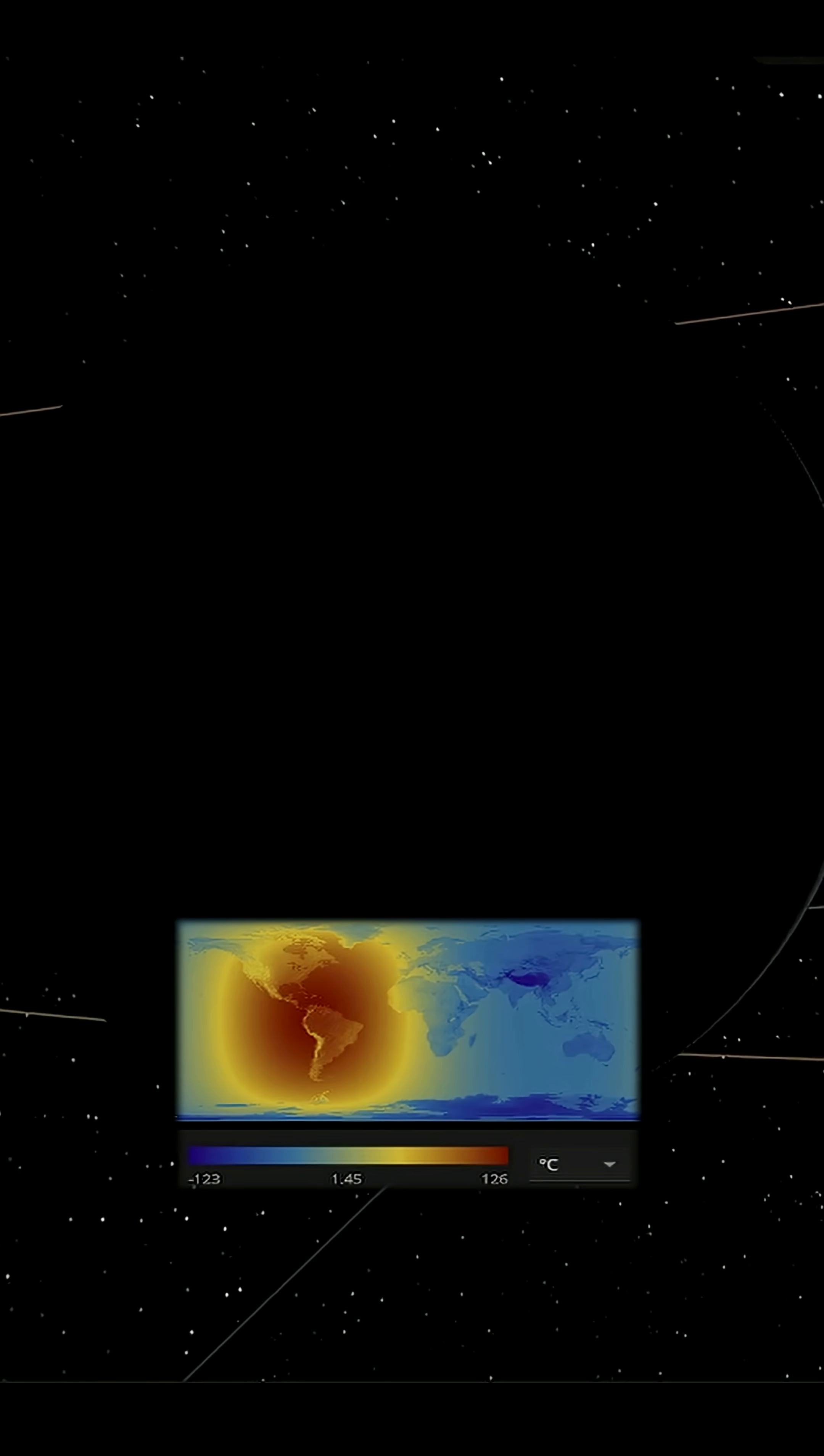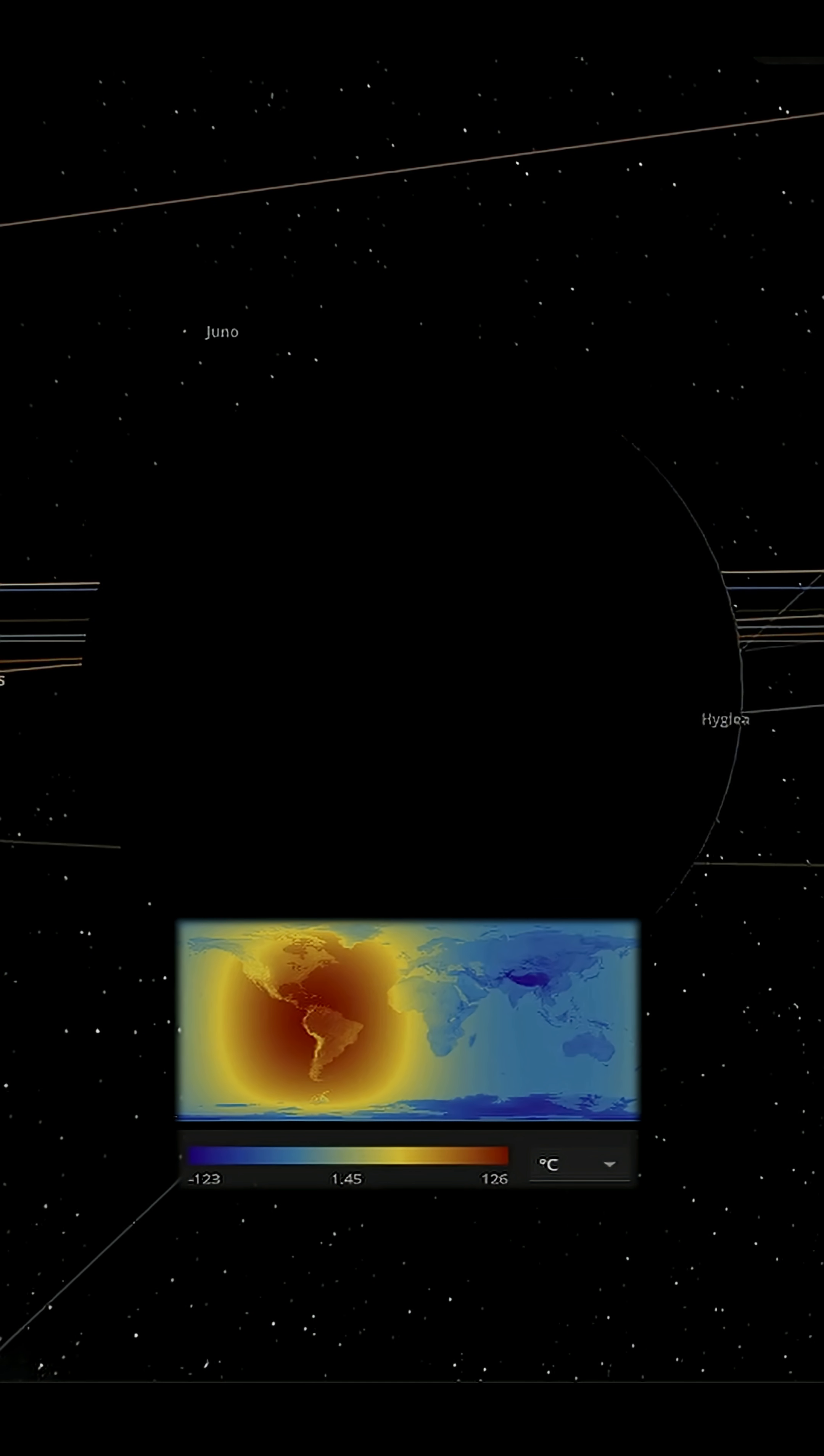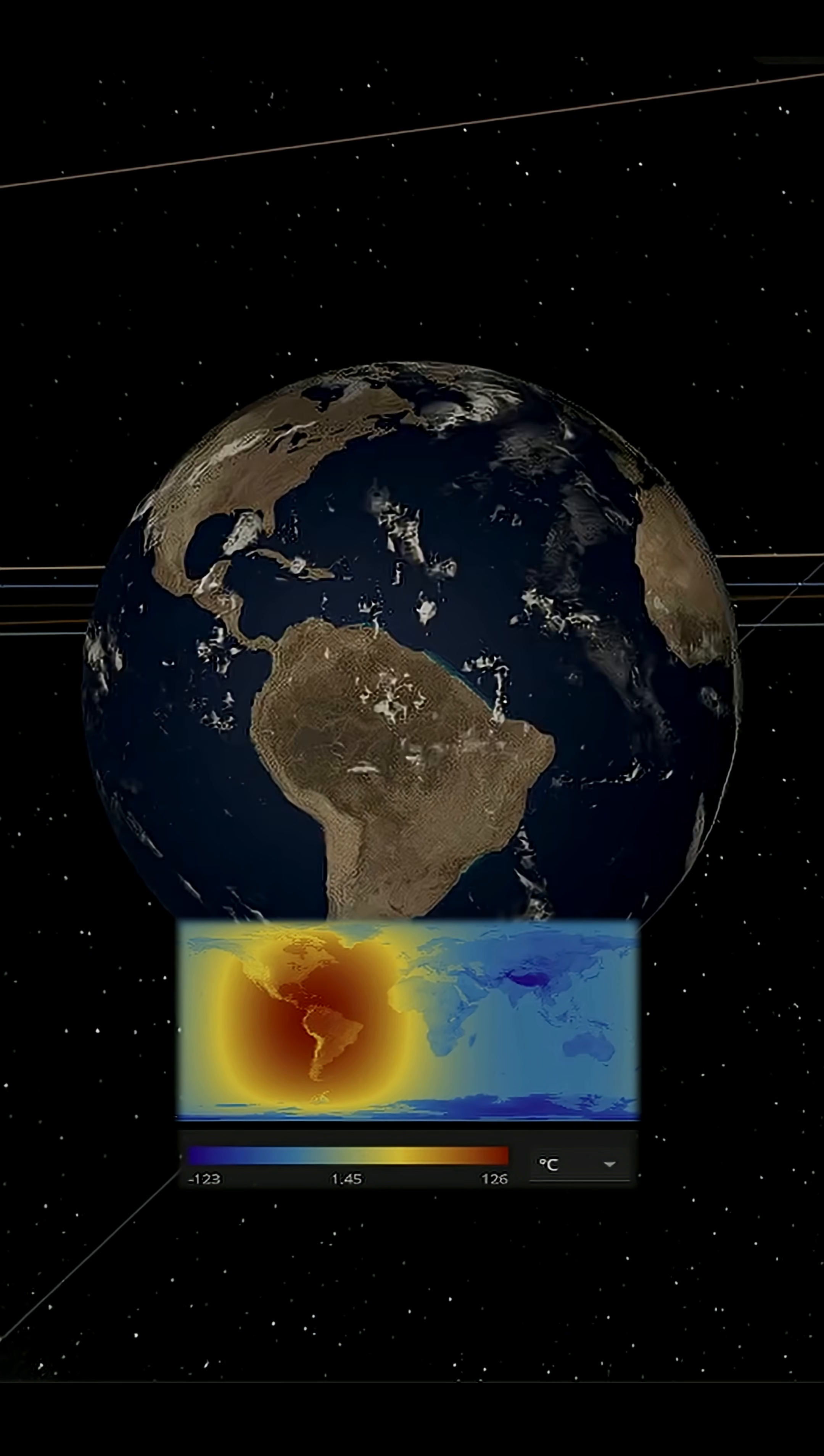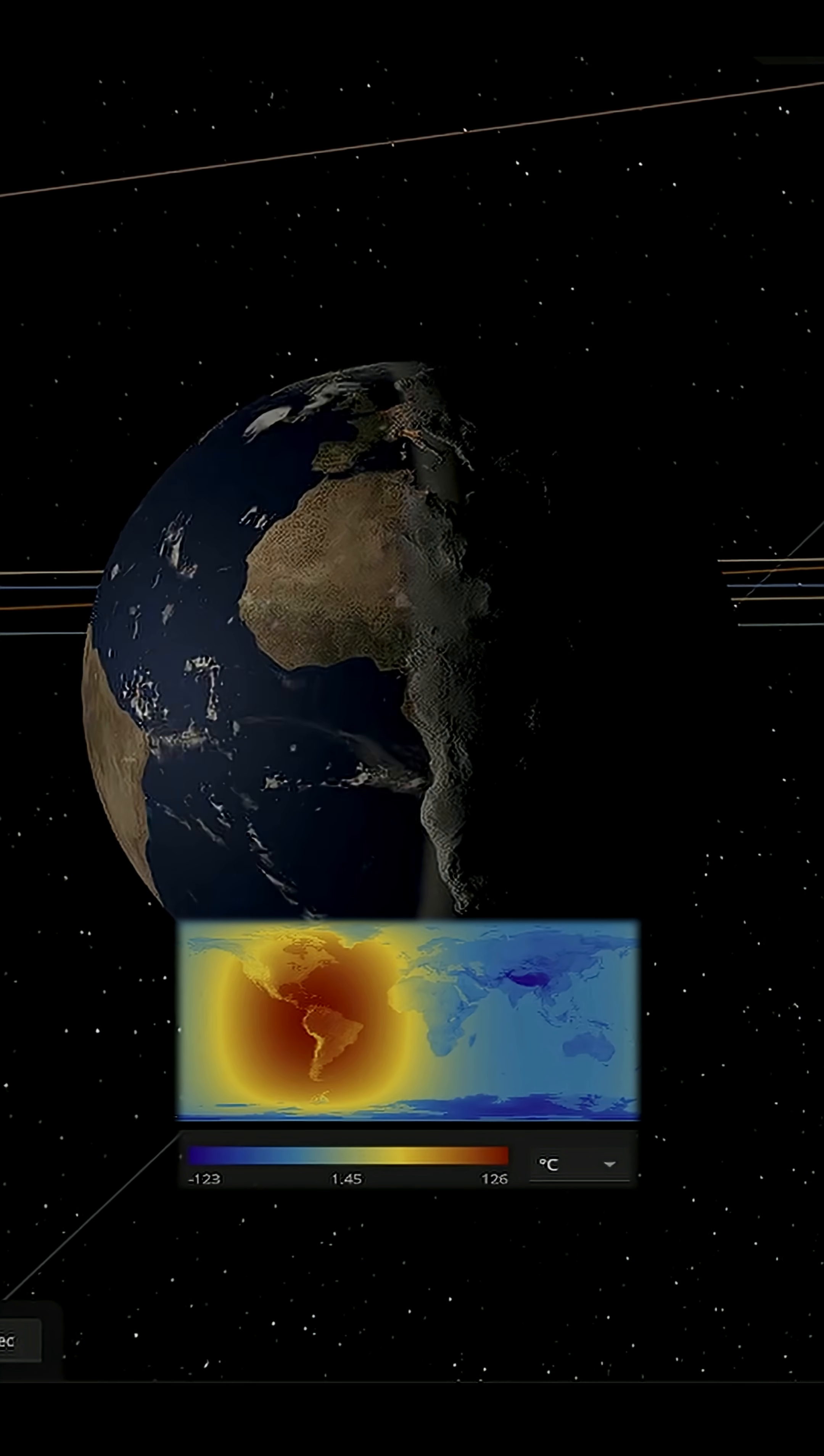As years have passed on the day side, places like South America and North America begin roasting. With the sun fixed overhead, temperatures rise past 120 degrees Celsius. The oceans there start to evaporate and disappear.